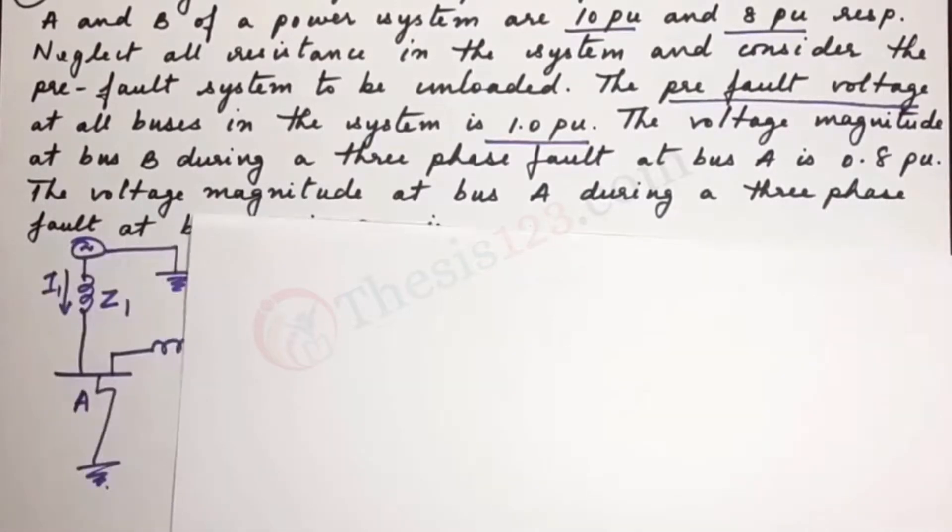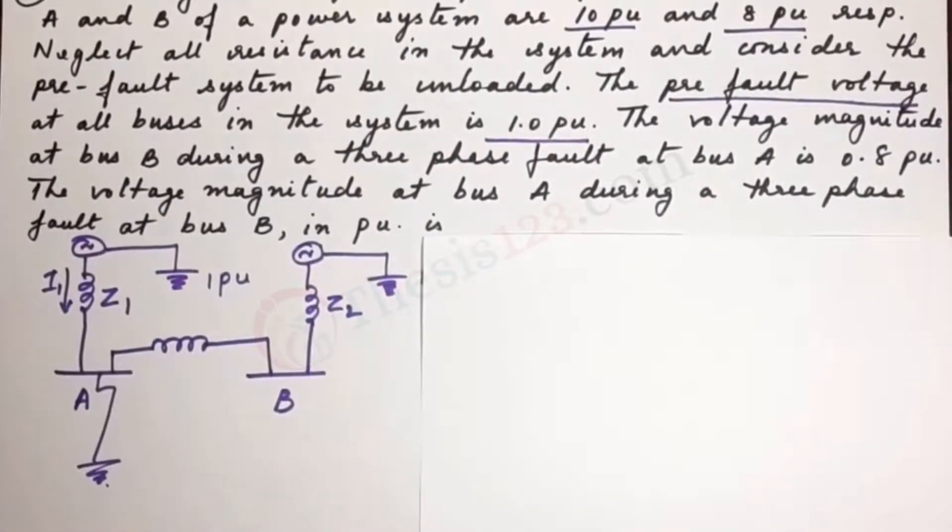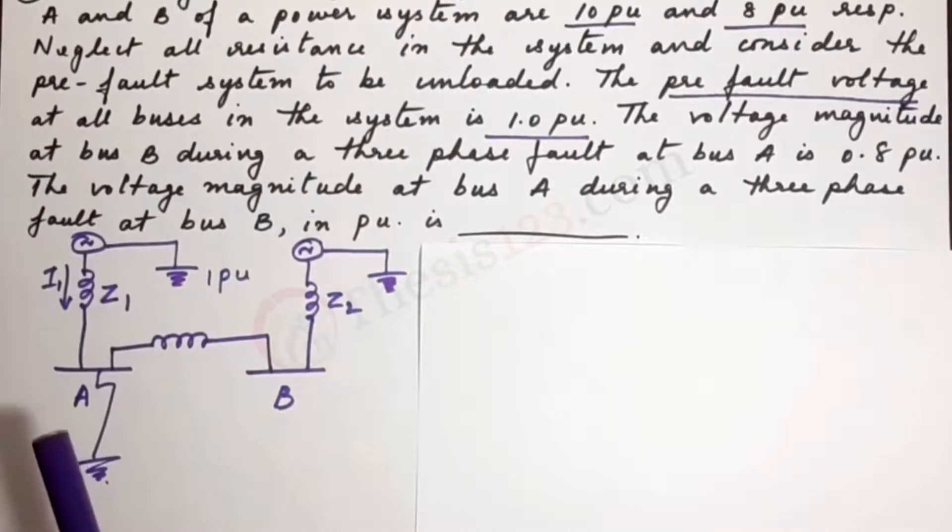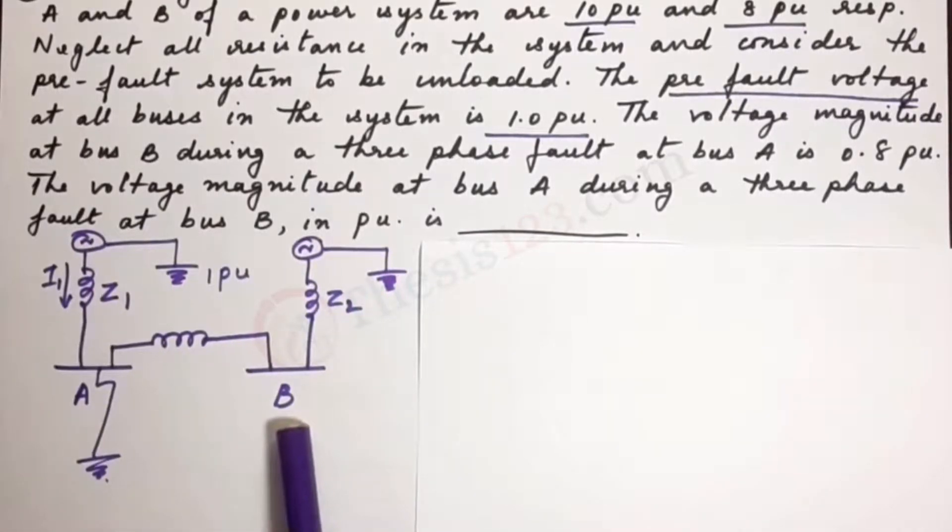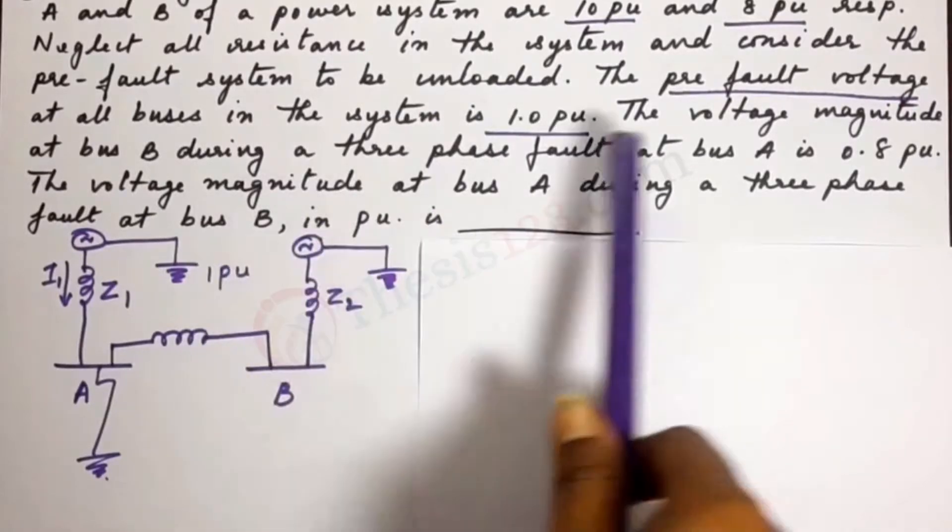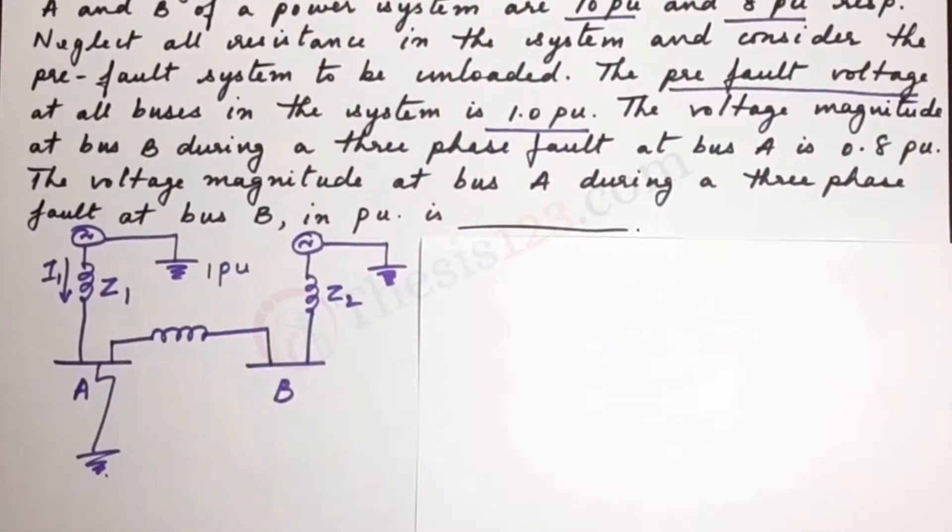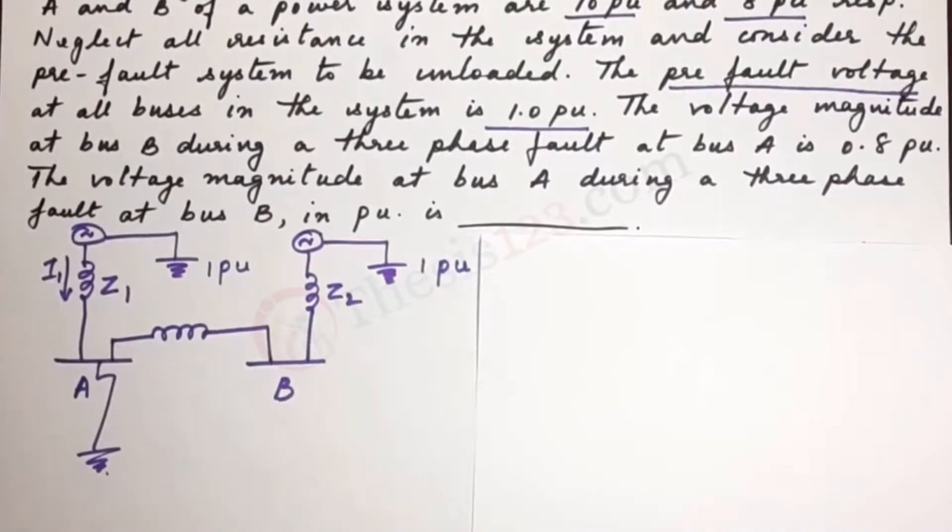So I have drawn a rough diagram over here considering A and B as the buses. We have that the pre-fault system is unloaded and at each bus it is 1 PU.